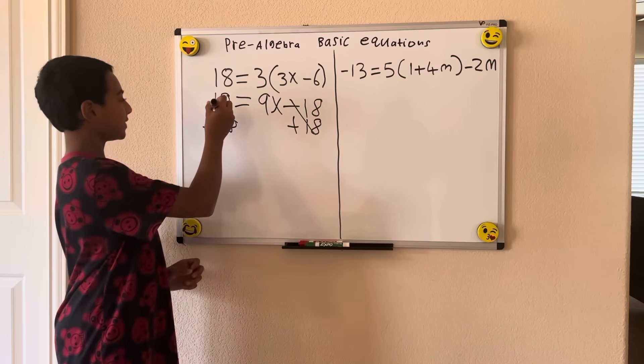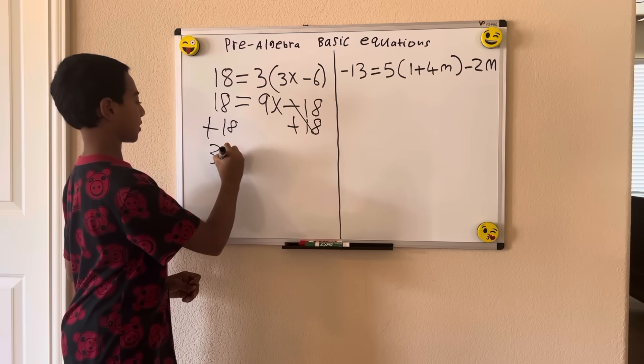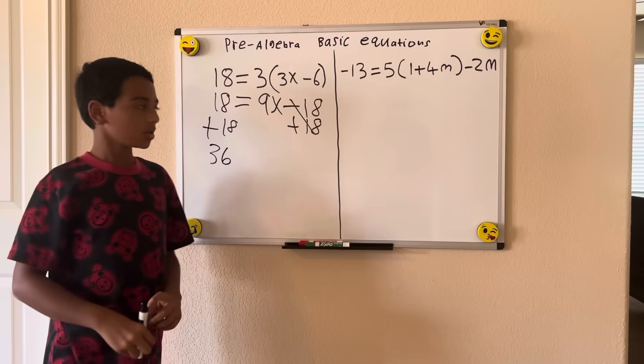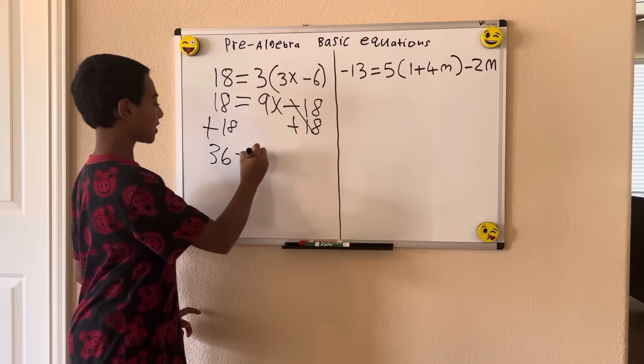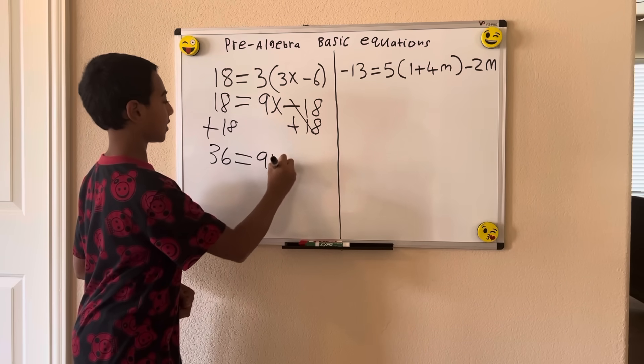And 18 plus 18 is 36. So now we're bringing down our 9x, we have 36 equals 9x.